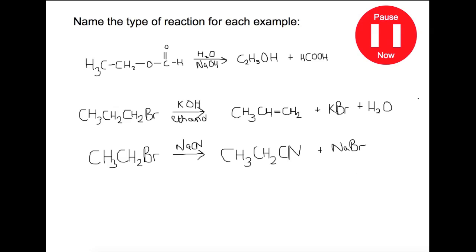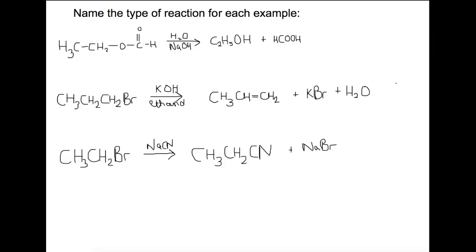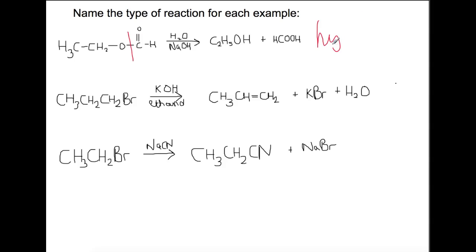For each of these reactions, I want you to name the type of reaction that is happening. Pause the video now and try these examples. So in the first reaction here, we have a large molecule. This is an ester. And you can see that after the reaction, we've produced two smaller molecules. In the reaction, we have used H2O and we've used sodium hydroxide. So we have split this molecule up at this point here. So this is a hydrolysis reaction.